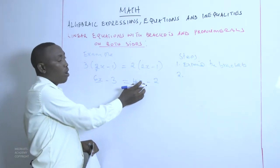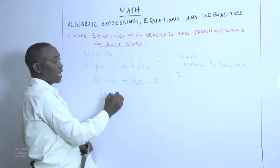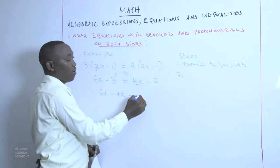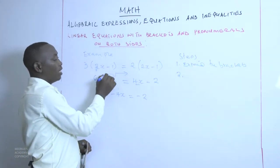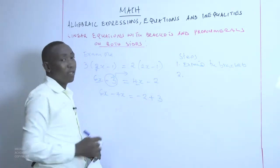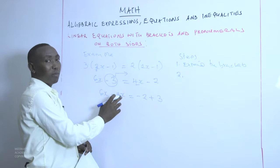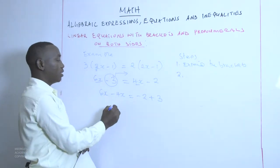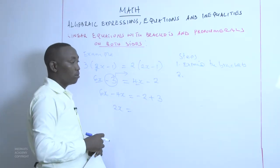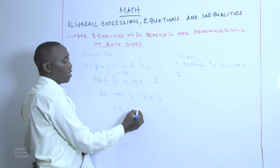So we have 6X minus 4X on the left-hand side. We also take the negative 3 to the other side, where we have negative 2. When negative 3 crosses the equal sign to the right-hand side, it changes sign to become positive 3. Evaluating the left-hand side: 6X subtract 4X gives us 2X, equals negative 2 plus 3. A deficit of 2 and a positive of 3 gives positive 1, so 2X equals 1.